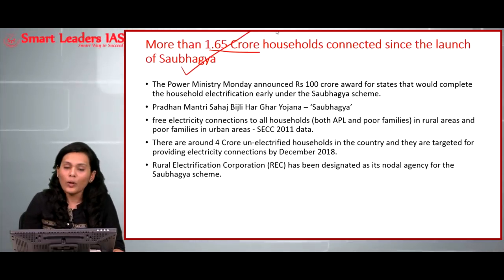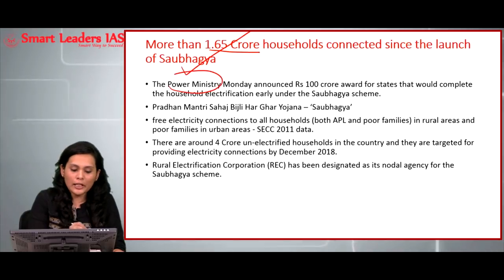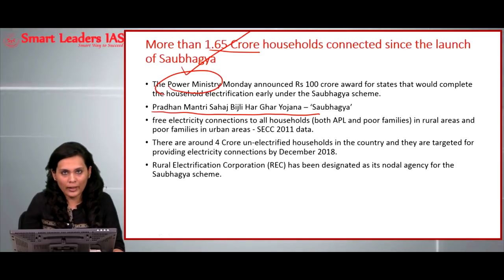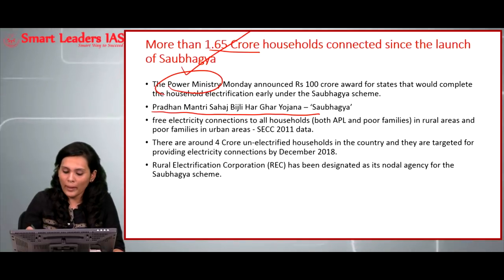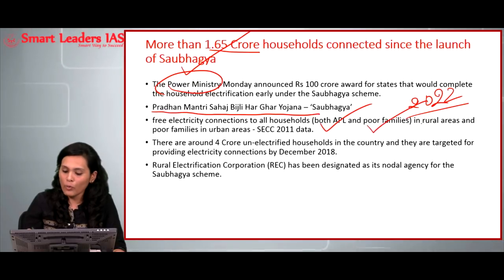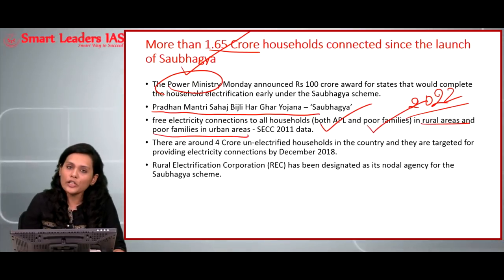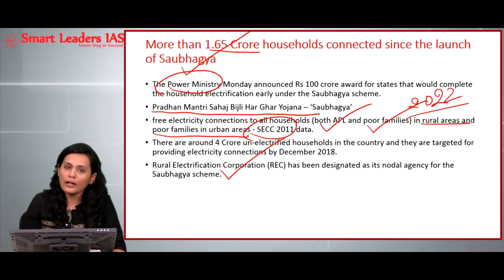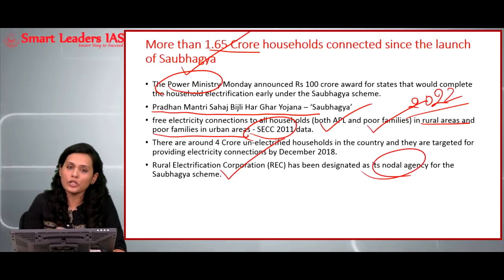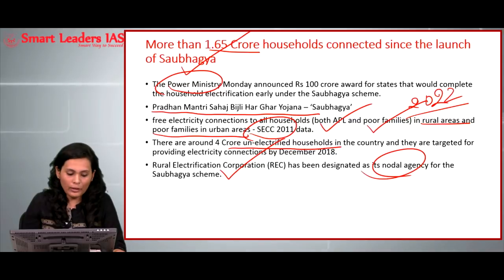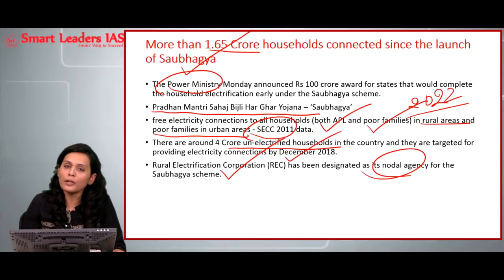The Saubhagya scheme is an initiative of the Ministry of Power, also called the Pradhan Mantri Sahaj Bijli Har Ghar Yojana. It aims at providing electricity connection to every single household in India, regardless of their economic scenario, by the end of 2022. The electricity connection is provided to both above-poverty-line as well as poor families, covering both rural and urban areas. Beneficiaries are chosen according to the Socio-Economic Caste Census 2011. The Rural Electrification Corporation of India is designated as the nodal agency for implementation. There are around 4 crore unelectrified households in the country targeted for electricity connection by December 2018.